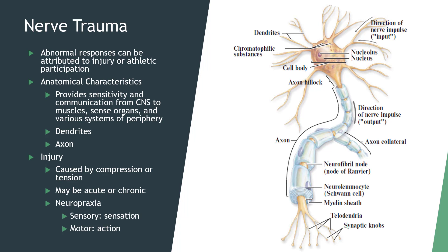Nerve trauma. Abnormal nerve responses can be attributed to injury or athletic participation. The most frequent injury is neuropraxia, produced by direct trauma. Lacerations and compression of nerves can also occur as a result of fractures and dislocations. Nerves provide sensitivity and communication from the central nervous system to muscles, sensory organs, and other peripheral systems. Neuron cell bodies have large nuclei with branched dendrites that respond to neurotransmitter substances. Each nerve cell has an axon that conducts a nerve impulse, encased in a neurolemmal sheath known as Schwann and satellite cells.